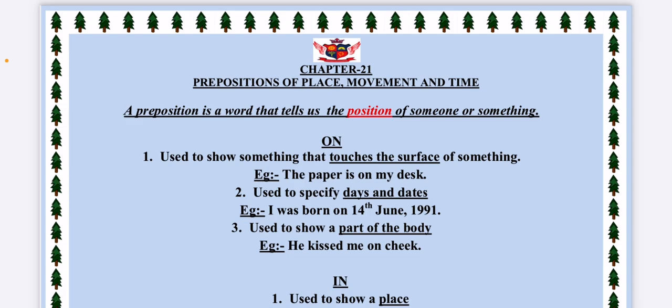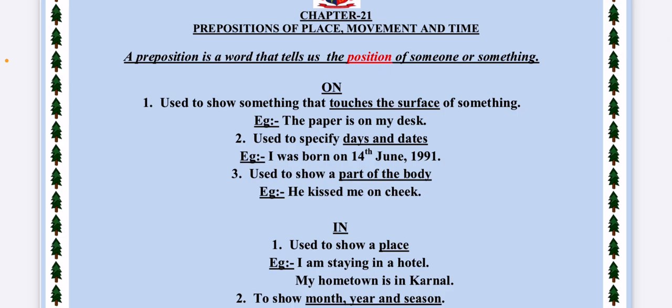Now there are many prepositions which you have to study. First preposition is ON. On is used to show something that touches the surface. For example, put those oranges on the plate, so the orange is touching the surface of the plate. The paper is on my desk. Second use of ON is it is used to specify days and dates. I was born on 14th June 1991. Third, it is used to show a part of the body. He kissed me on my cheek. I got hurt on my knees.